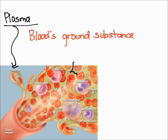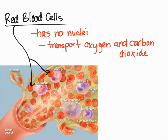Plasma is all of this yellowish liquid. Next, let's talk about red blood cells — probably the most well-known component of blood. As you can see, red blood cells essentially look like flattened donuts but without the hole in the middle. In the diagram, they're the little red discs.